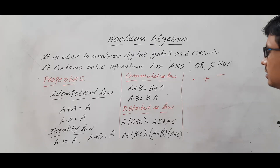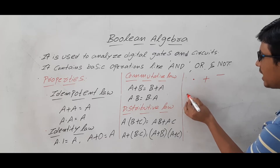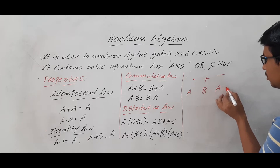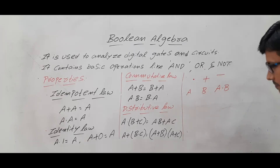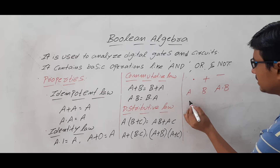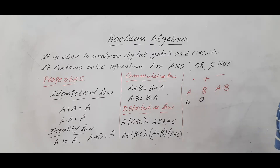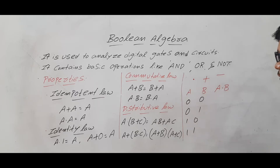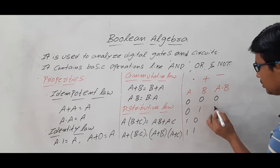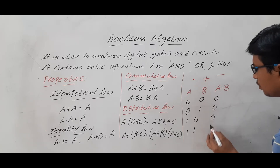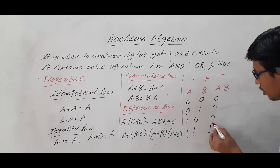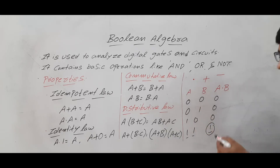Let me discuss the AND operation. Suppose I have A and B. The inputs are: 0 and 0, 0 and 1, 1 and 0, 1 and 1. A AND B produces: 0, 0, 0, 1. If both the inputs are 1 then it will produce output 1, otherwise it will produce output 0.